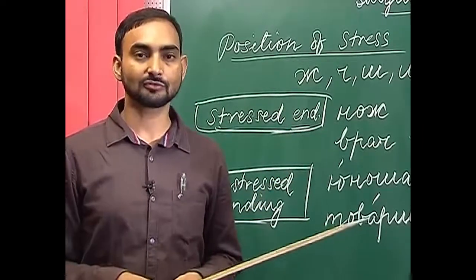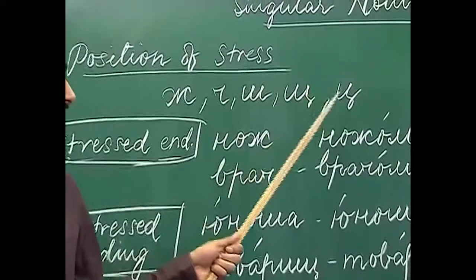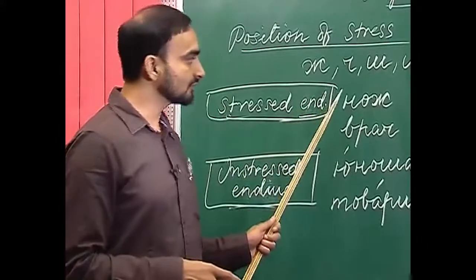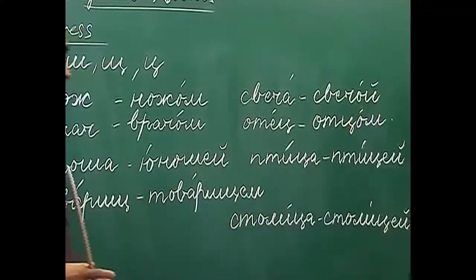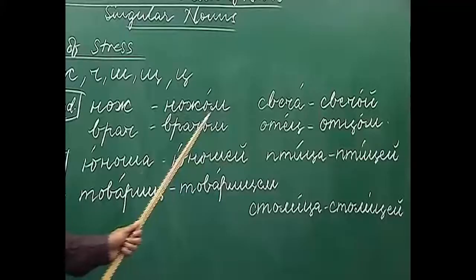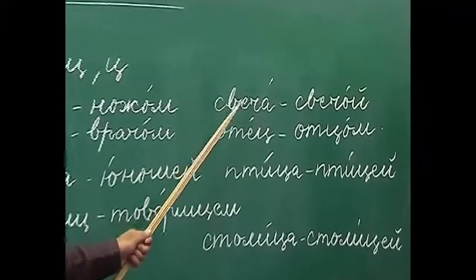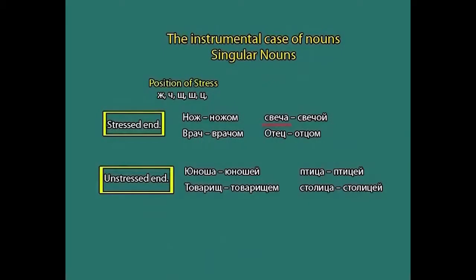Apart from the regular rules of declension, there are other rules for declining nouns in the instrumental case. One of them: if the stem of a noun ends with ж, ч, ш, щ, or ц, then we must check whether the ending is stressed or unstressed. If the ending is stressed, we use -ом with masculine nouns and -ой with feminine nouns. For example, нож (knife) becomes ножом; свеча (candle) — the stem is stressed — becomes свечой; врач becomes врачом.